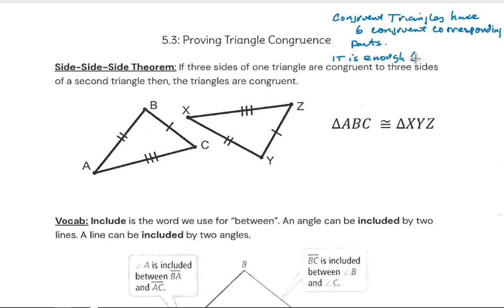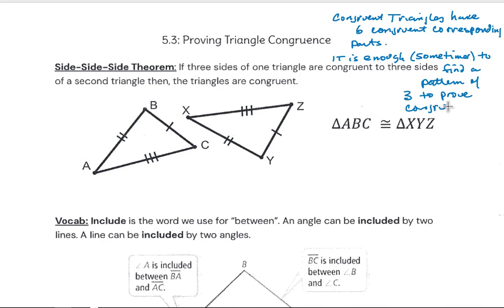Even though there are six congruent parts — the three angles and the three corresponding sides — by showing the Side-Side-Side pattern, we can use the shortcut. By showing only that those three sides are congruent, we can say that all the different parts of the triangle are congruent.